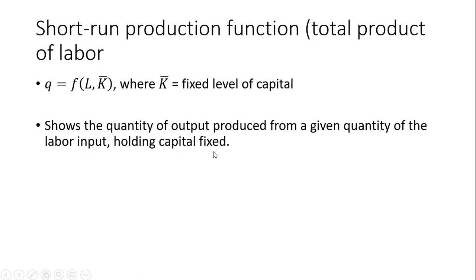A short run production function or total product of labor function will tell us, for example, if we use 10 workers, we can produce 400 units of output. If we use 30 workers, maybe we can produce 900 units of output, and so on.